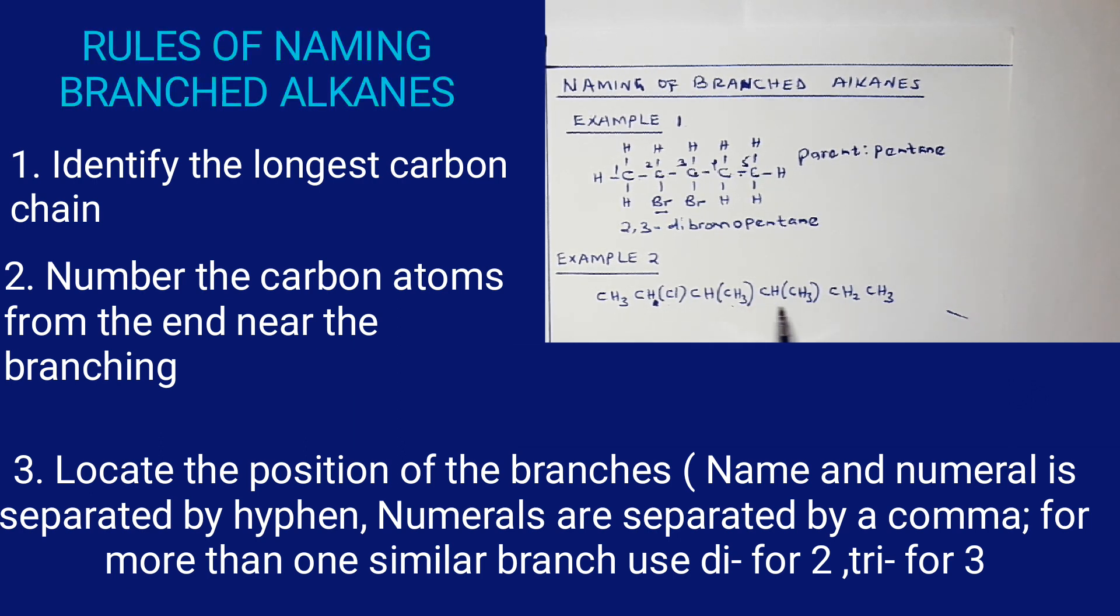For us to name this compound, step number one is to identify the longest continuous carbon chain. So identify: one, two, three, four, five, six. Because we have six carbon atoms, the parent name becomes hexane.